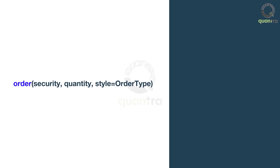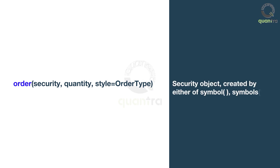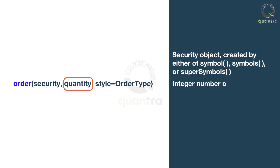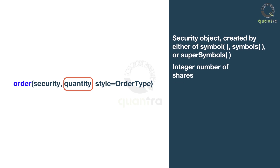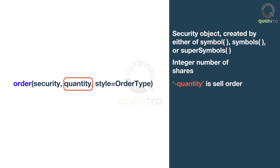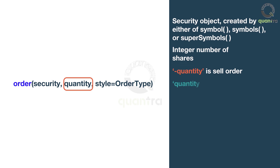The syntax to place an order is: call the order function with the first parameter as security, second parameter as quantity, and third parameter as style. The security argument signifies the security object created by either using the symbol, symbols, or the super symbols functions. The quantity is the integer number of shares. A negative sign before quantity would mean a sell order; if no sign is specified before the quantity, then it would mean a buy order.